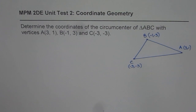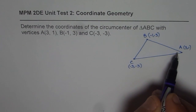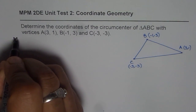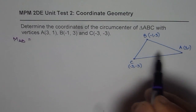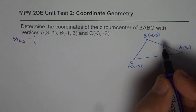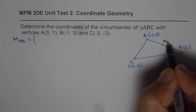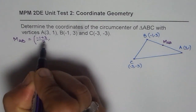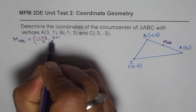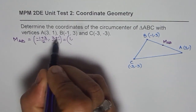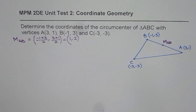When we say circumcenter, what are we trying to find? We are trying to find the midpoint of a segment, the slope of the segment, and then the right bisector. Let us begin with segment AB. The midpoint of AB: the x-value is (−1 + 3) / 2 and the y-value is (3 + 1) / 2. That gives us (1, 2) as the midpoint.